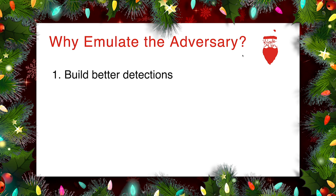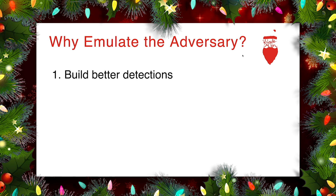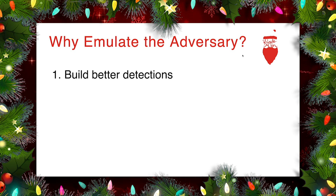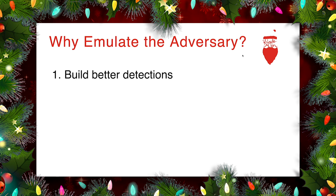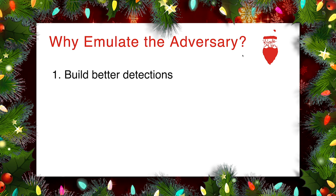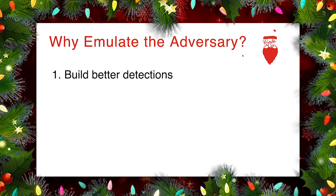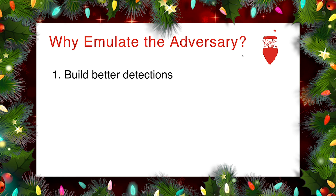Why should we emulate the adversary? Number one, it allows us to build better detections. One of the primary activities that you engage in as a blue teamer protecting an organization is to create detections that can raise alerts when evidence of adversary activity is detected. In order to do that and improve those detections over time, you need a source of telemetry — a source of data that represents the adversary's activities. A great way to get that is through emulation, which offers benefits especially around consistency and repeatability.